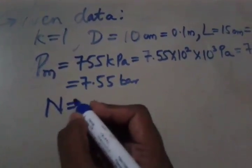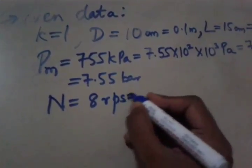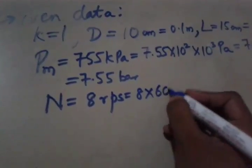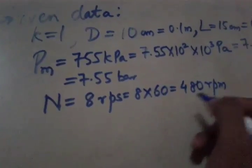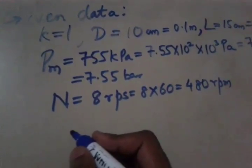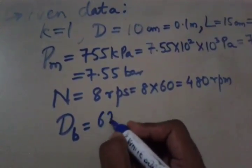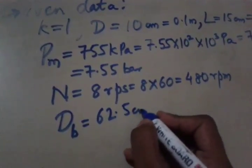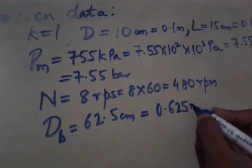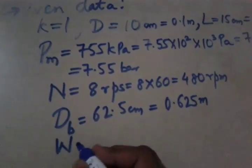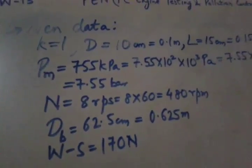Then N, we have been given RPS but we require it in RPM, so we have to multiply this by 60, so we will have 480 RPM. And then we have been given brake wheel diameter that is DB is equal to 62.5 cm, so 0.625 meter, and we have been given net load that is W minus S as 170 Newton.